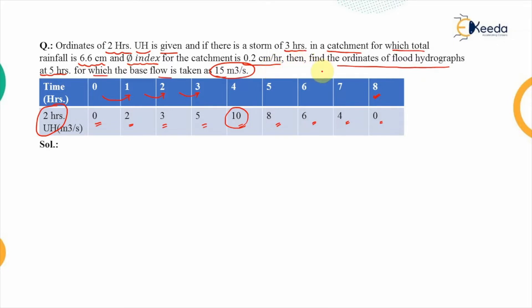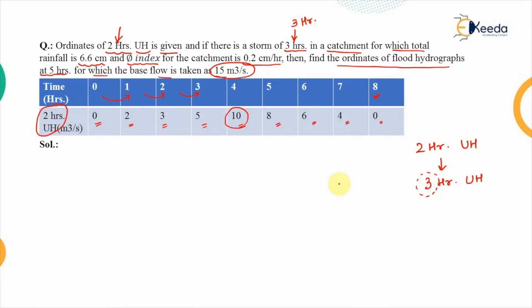Using this data we have to find the ordinates of the flood hydrograph for the entire curve, and check the value at the fifth hour. The data is given for a two-hour unit hydrograph but we require a three-hour flood hydrograph, so we need to derive the three-hour unit hydrograph from the two-hour one. The problem is that the given duration is not an integral multiple of the desired duration — it is 1.5 times — so the direct method of superposition cannot be used.